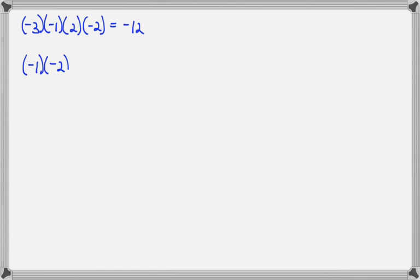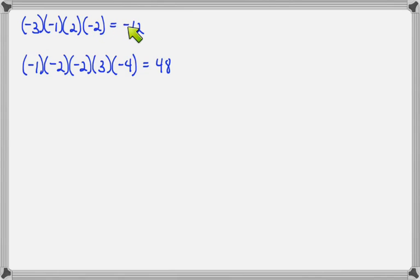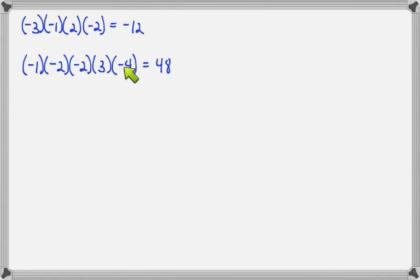Let's try those same problems again using the shortcut. For the first problem, counting negative signs: one, two, three — an odd number of negative signs gives a negative answer. Then multiply three times two times two to get 12, so negative 12. For the second problem: one, two, three, four negative signs — an even number makes a positive answer. Then one times two times two times three times four gives us 48, so positive 48.